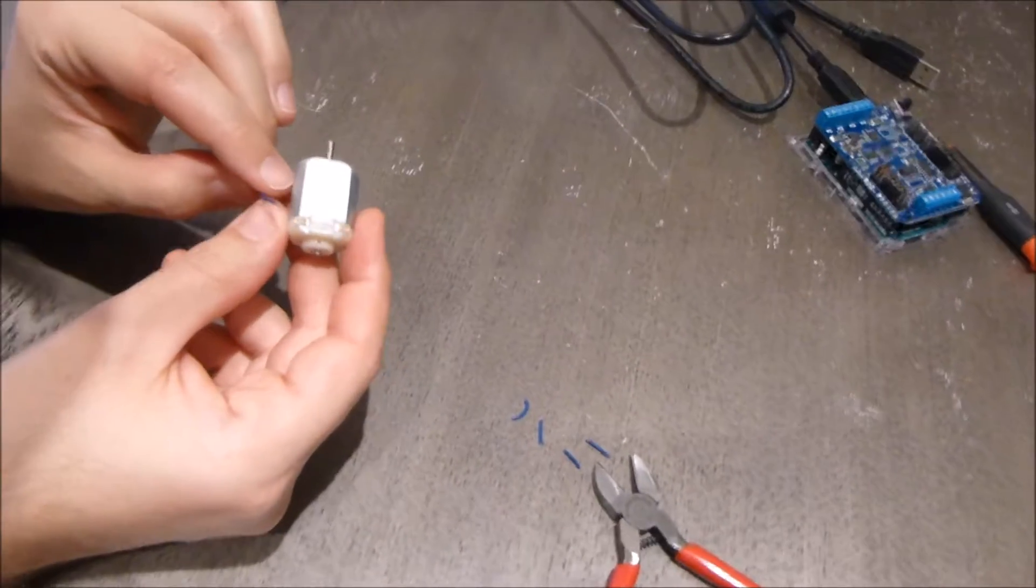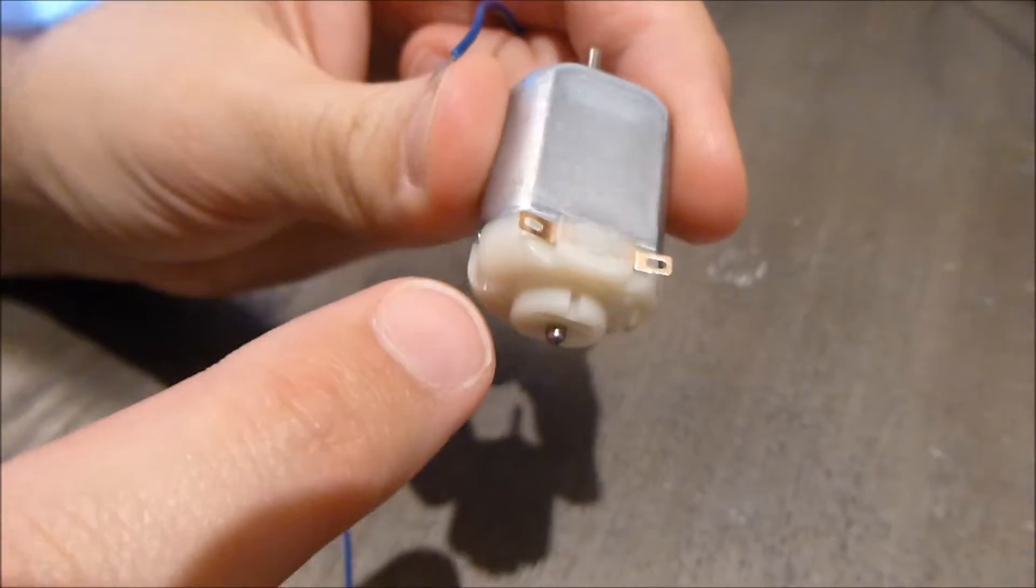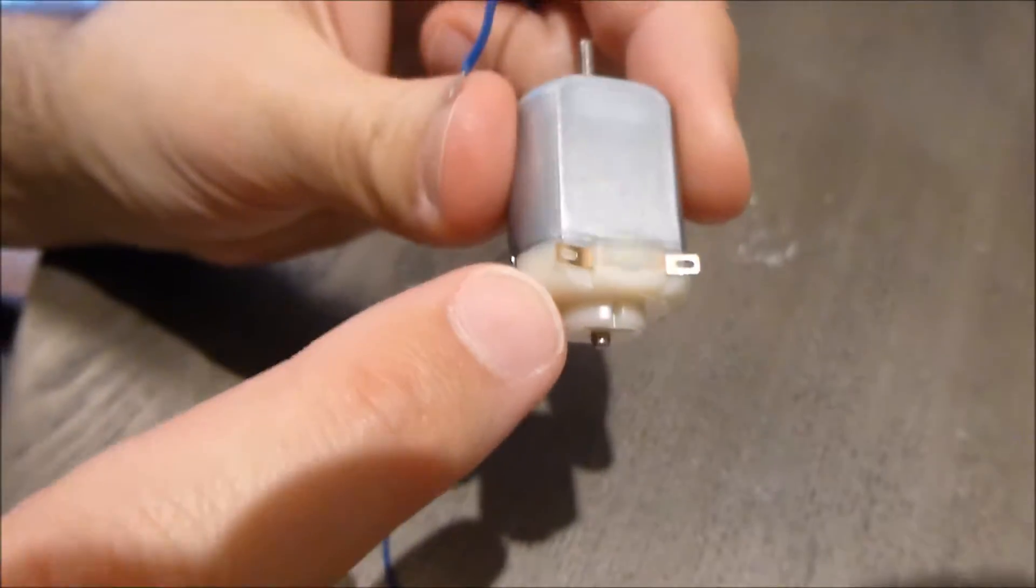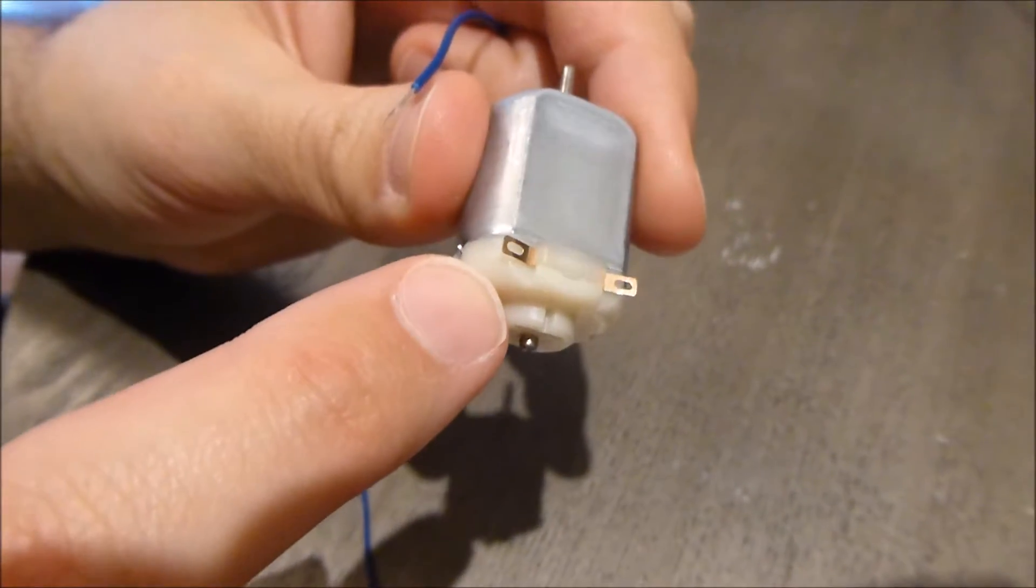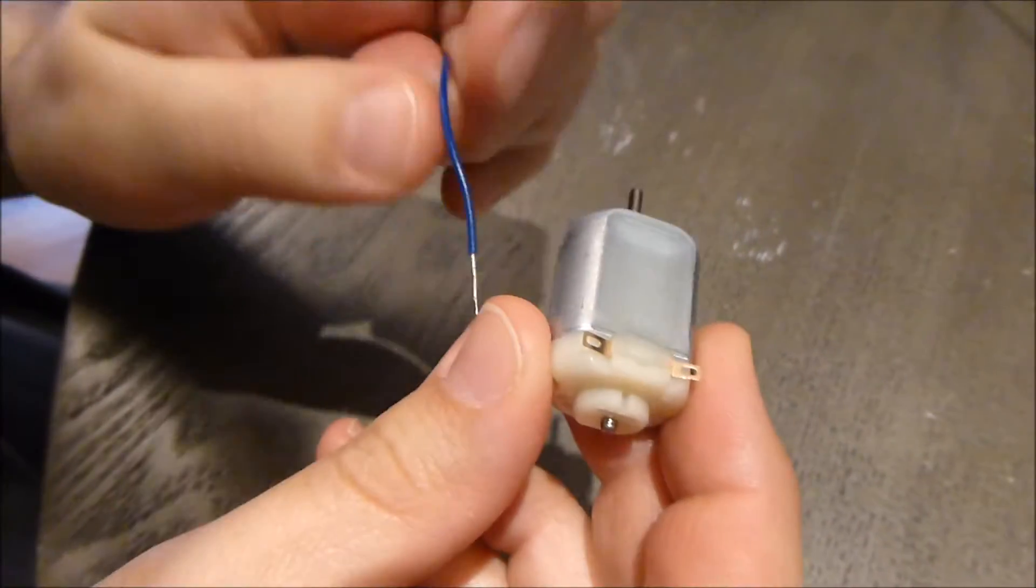And here's what we're going to do. We're going to put one end of each of these wires through these little metal tabs on the motor. These tabs are actually super fragile, and if they break off, that's it for this motor. You'll have to get a new motor, so be really careful with those.